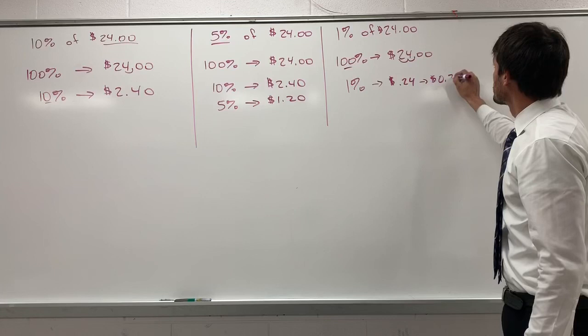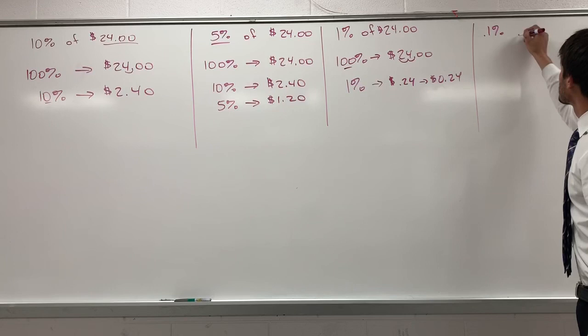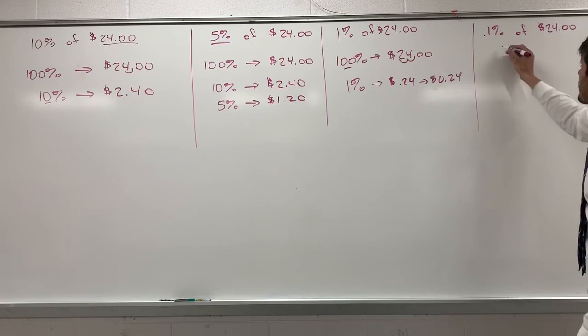And just for kicks, let's go ahead and do 0.1% of $24. This is used in a lot of tax calculations. 0.1% would be, well, if 10% is one decimal movement, 1% is two decimal movements,